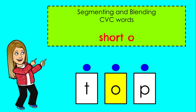Today we'll be blending short O words. Remember, the short O makes the 'ah' sound. For each word, say the sound of each letter, and then blend those sounds together to read the word. Here we go.